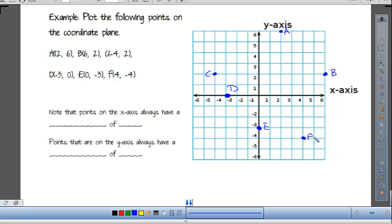Everybody's probably comfortable with that, but any questions? Note that points on the x-axis always have what? We had one point on the x-axis, but for any point on the x-axis, what would it have in common? A 0 y-value, always has, will always have a y-value of 0. Very good. And points that are on the y-axis, then, are always going to have an x-value of 0. So keep that in mind.